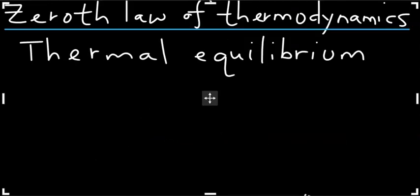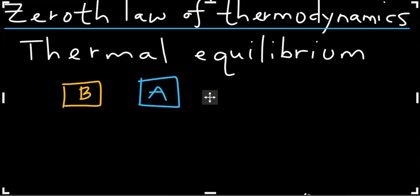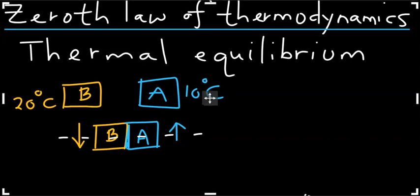Before explaining the zeroth law of thermodynamics, let's look at the concept of thermal equilibrium. Assume you have two objects, B and A. The initial temperature of object B is 20 degrees Celsius and of object A is 10 degrees Celsius. When they are brought together so they touch, the temperature of B will go down and the temperature of A will go up, until both settle somewhere in between — say, 15 degrees Celsius.